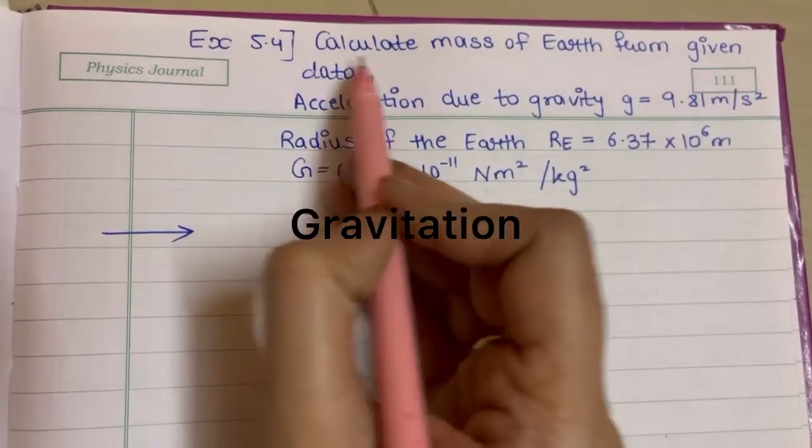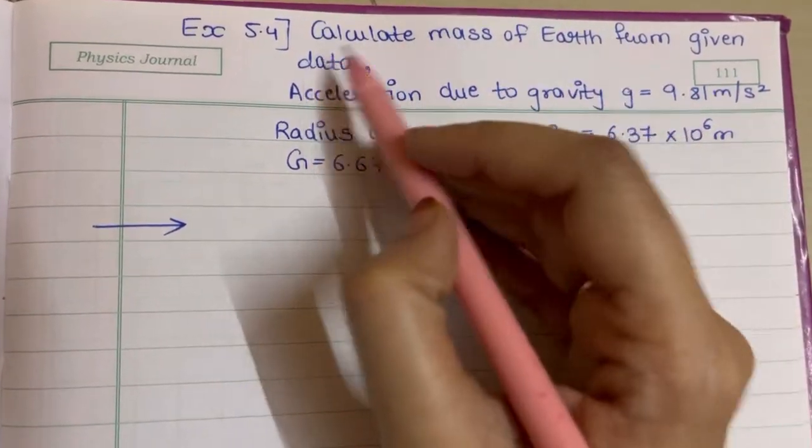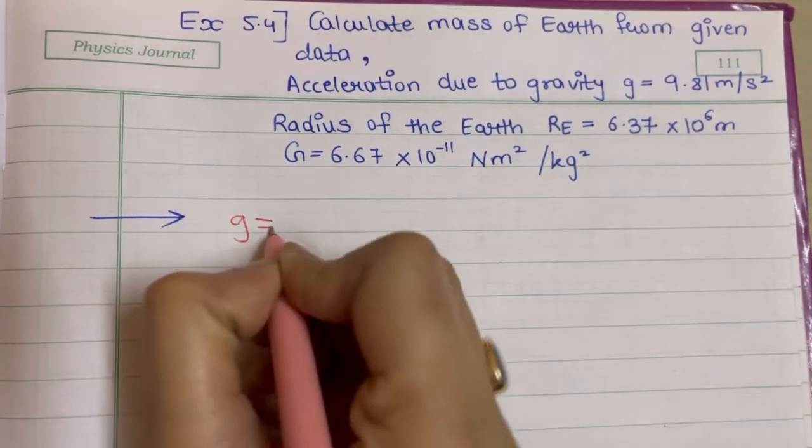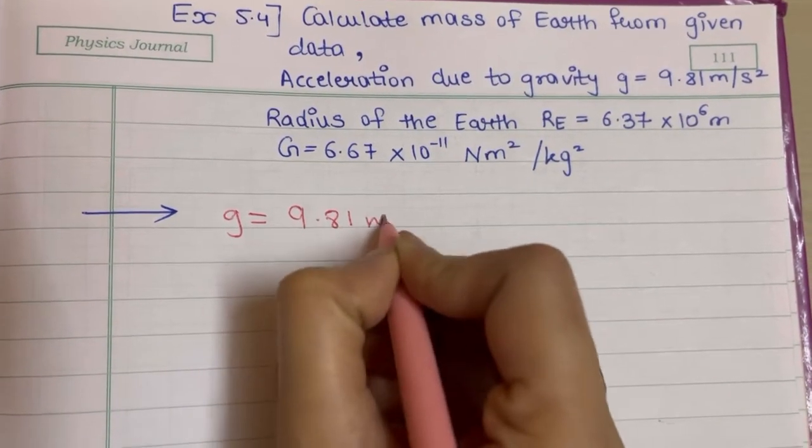Starting with example number 5.4, calculate mass of Earth from the given data. Acceleration due to gravity, that is g, is given to us 9.81 meter per second square.